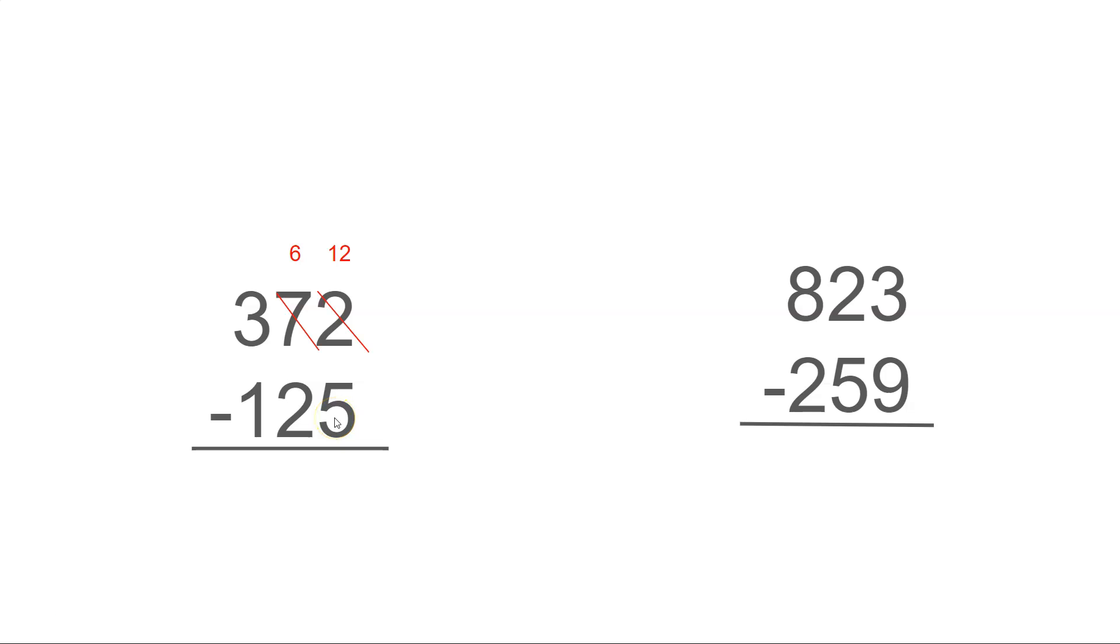All right, so five out of 12 we can do. So five, six, seven, eight, nine, ten, eleven, twelve is what? Seven. Okay, and then six minus two, we can do that too. And that would be four. And three minus one would be two.